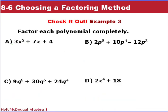Now, it's your turn. You have four check-it-outs to do for this. Again, same steps. Factor out the greatest common factor first. If it's a trinomial, perfect square trinomial. If it's a binomial, difference of two squares. And keep factoring.